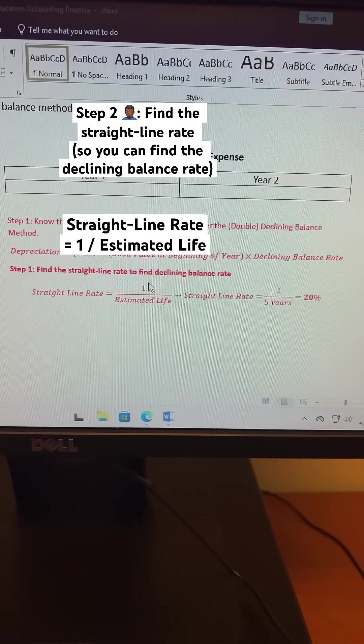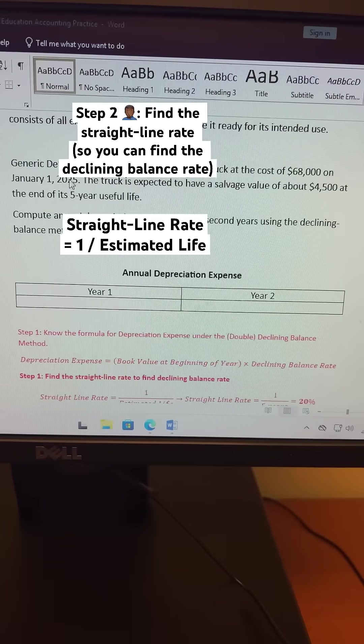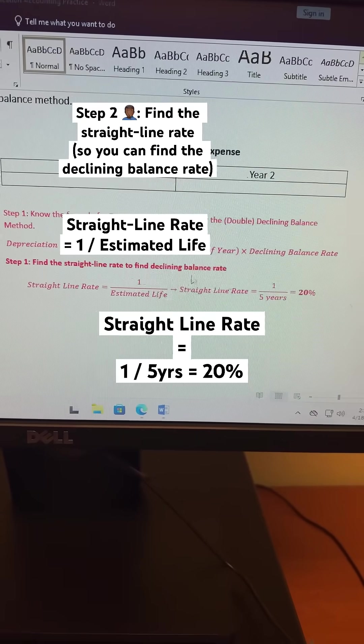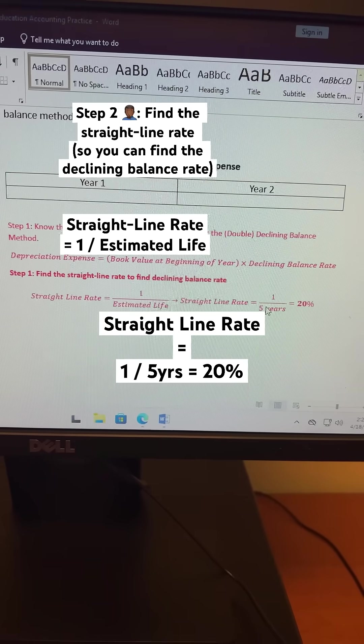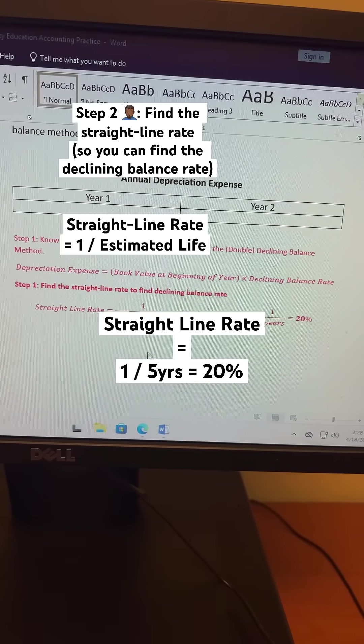Since our useful life is 5 years, as it said, that means our straight-line rate is 1 over 5 years, which is equal to 20%.